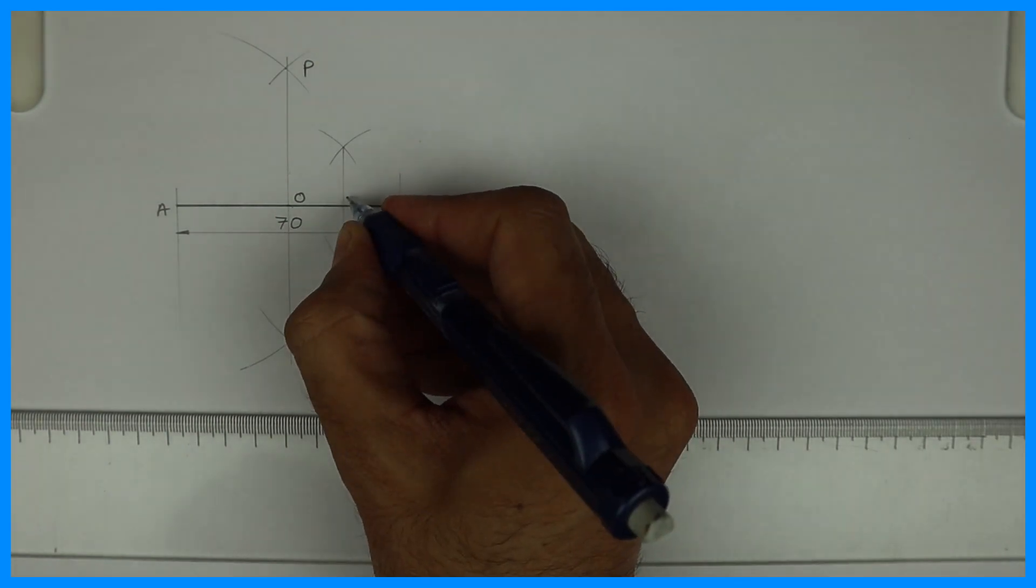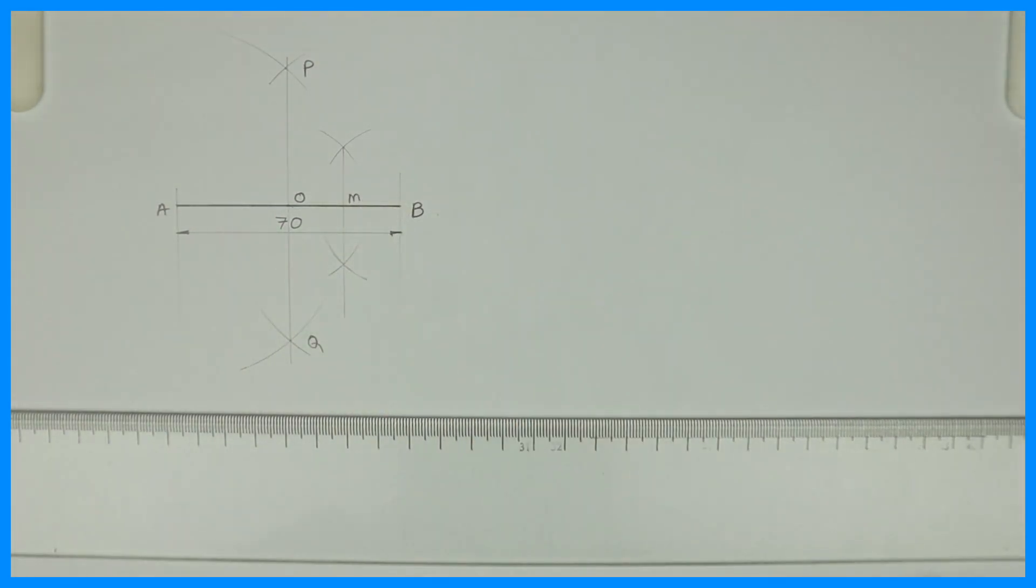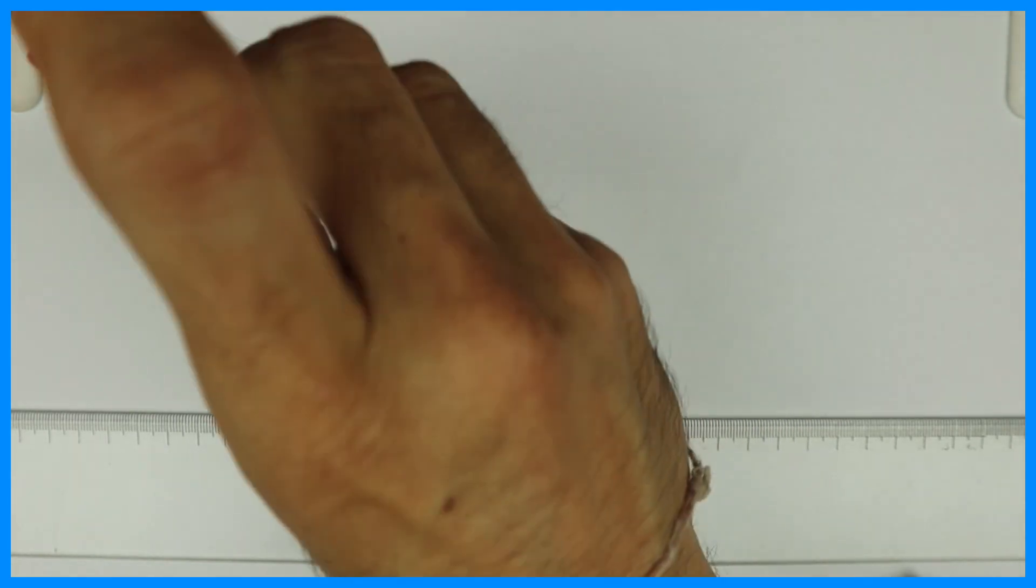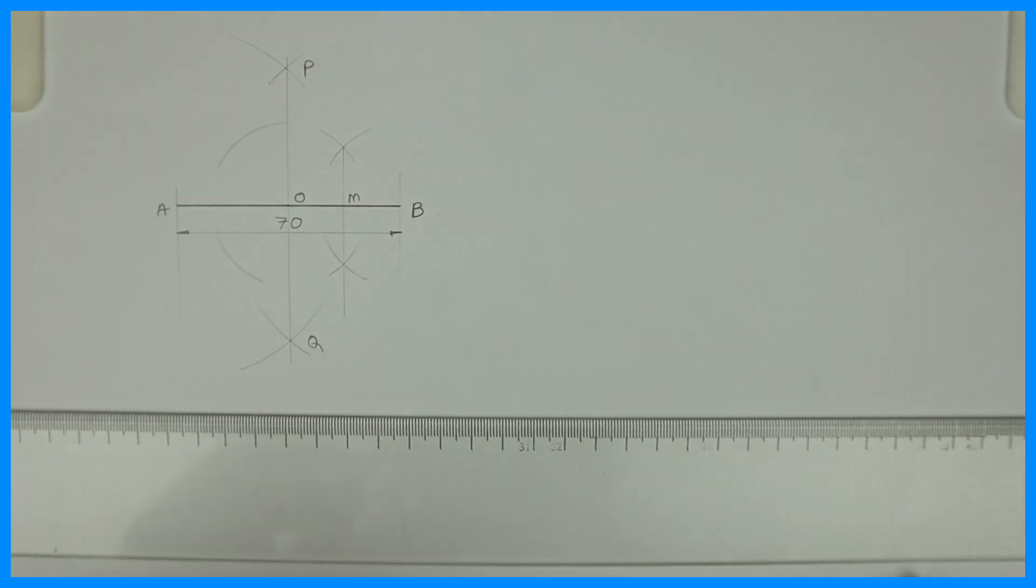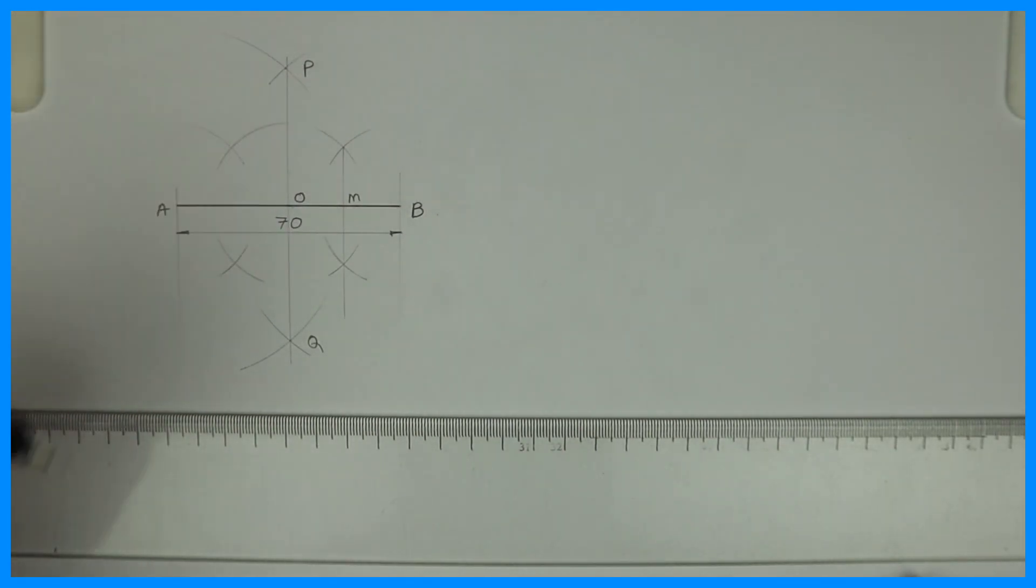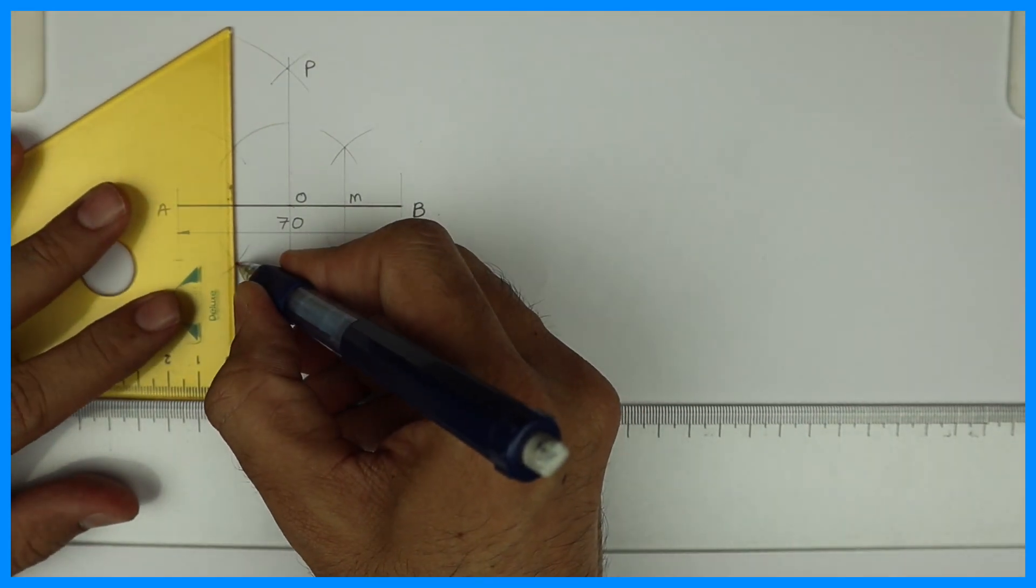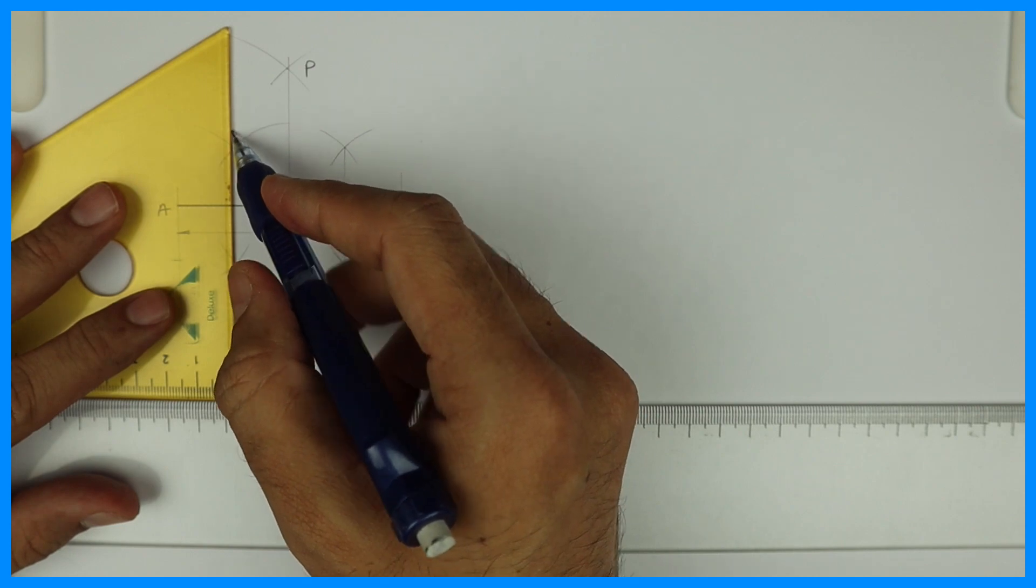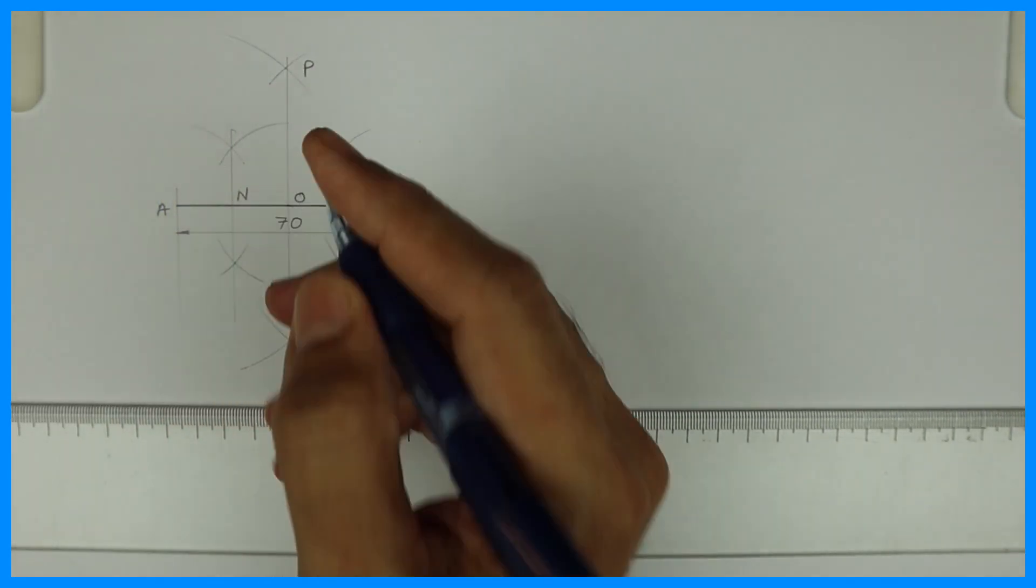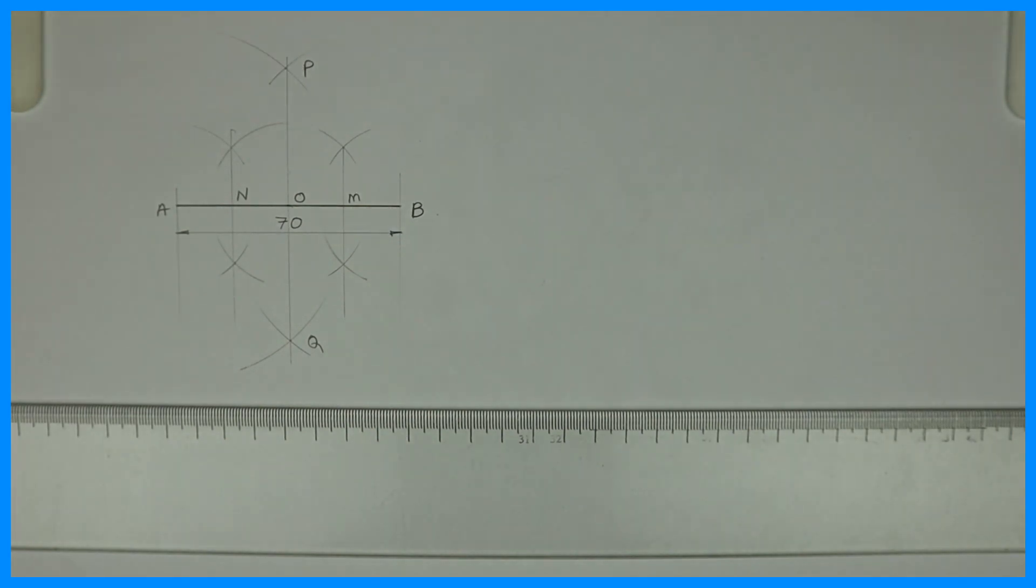Same way again you'll divide line OA into two parts. This is M. From O and A you cut more than half on both sides like this. So you'll get two more parts. So in total you got four parts. So we have divided line AB into how many parts? Four parts.